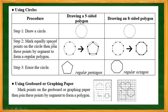Let's draw a polygon. The procedure for drawing a five-sided polygon or an eight-sided polygon is: step one, draw a circle. Step two, mark equally spaced points on the circle. Step three, join these points by line segments to form a regular polygon, then erase the circle. This makes a regular pentagon — a five-sided figure — or a regular octagon.